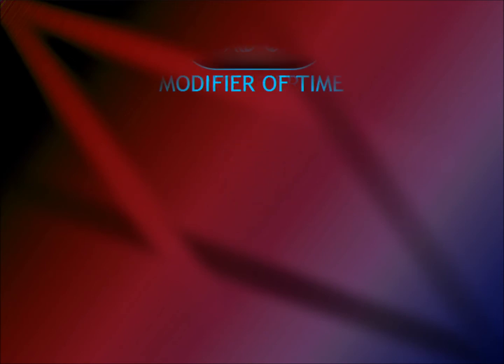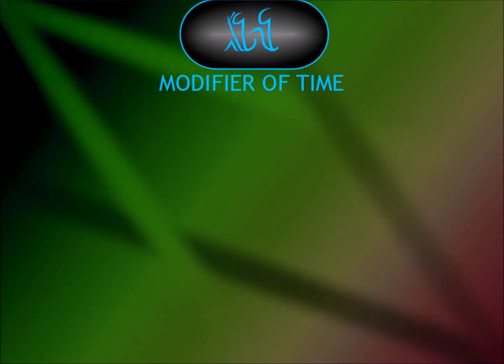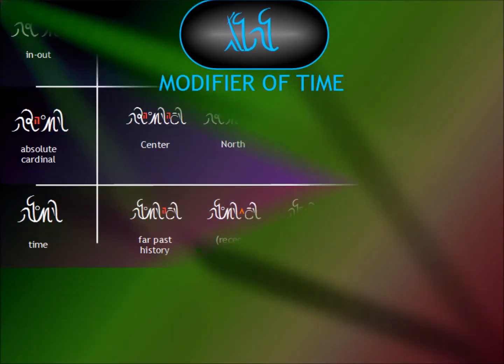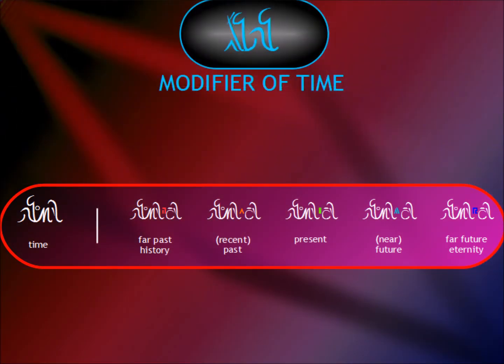The first category of modifiers we'll discuss is the one with the root word 'us', meaning time. These modifiers are important because they answer the question of the otherwise missing verb tenses. This idea briefly came up two videos ago. We know, since the sixth video of the tutorial series, that there are five main points on the axis of time. We could therefore also say that Ayla's has five tenses, or five general points in time in which an action can occur.